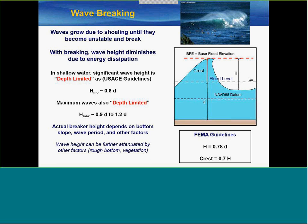The Army Corps of Engineers uses a shallow water depth-limited significant wave height of 60% of the water depth. What that means is waves can be smaller than that, but if they try to get any bigger, the breaking dissipates energy back down to that level. Individual maximum waves can be bigger — roughly 1.5 to 2 times significant height. Actual conditions depend on complicated relationships between bottom slope, wave period, and other factors. If we think about adaptation methods, we hope that limited water depth and breaking can cause this type of wave reduction, which we can further reduce with rough bottoms, a reef, or vegetation.